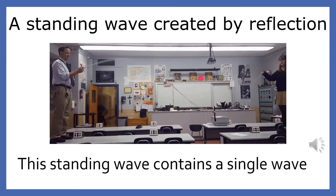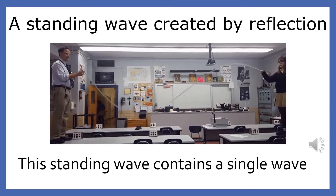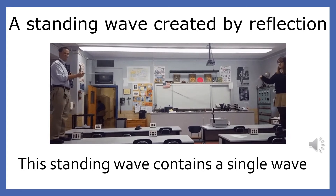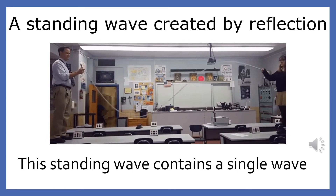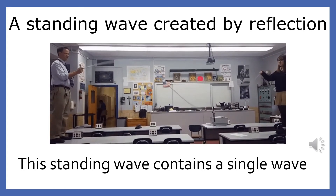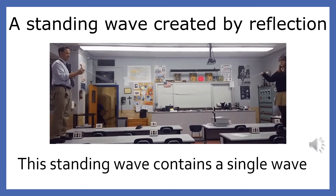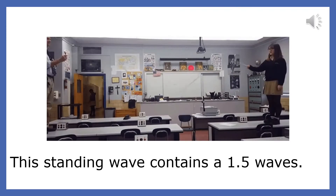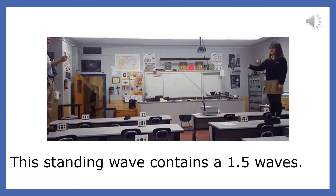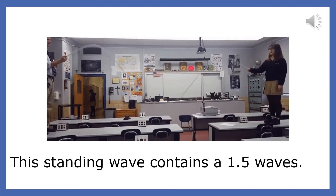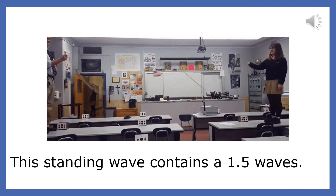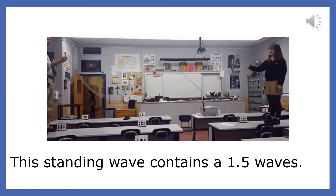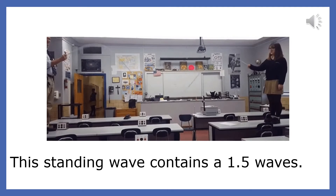Some standing waves are created by a single source. The standing wave is created when the wave generated by the student on the right meets the wave that reflects off the hand of the teacher on the left. This standing wave is one wavelength long. The standing wave you see is created when the wave from the student on the right meets with the wave that reflects off the teacher's hand on the left. This standing wave is one and a half wavelengths long.